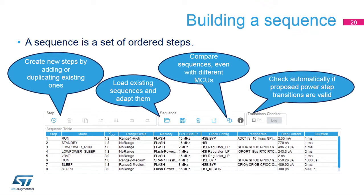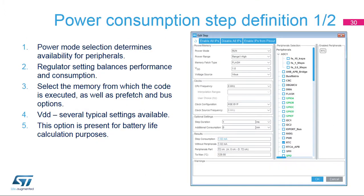The Compare feature displays a comparison of the power and performance in the current scenario with a saved sequence. Different configurations, including different MCUs, can be evaluated against each other. A power step can be added or edited in a dialog window. If the Transition Checker is enabled, it will preset the new step with allowed values.